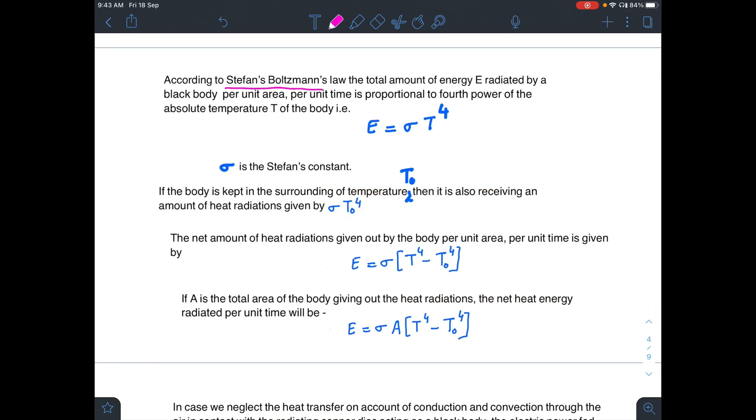Now according to Stefan's Boltzmann law, the total amount of energy radiated by a black body per unit area per unit time is proportional to the fourth power of temperature. So E will be sigma T to the power 4, and here sigma is Stefan's constant.